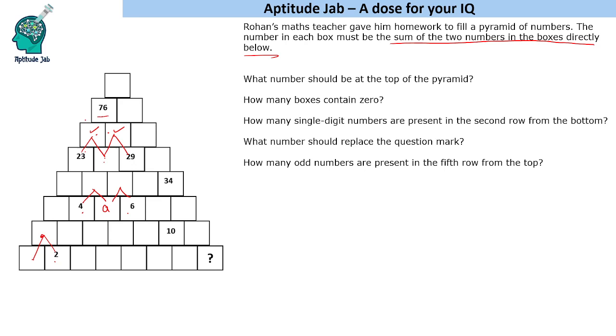So let us say this number is x. So this number will be x plus 23 and this will be x plus 29. When we add these two numbers, we get 2x plus 52 as 76. So 2x is 24, or x is equal to 12. So now we can fill these numbers and get the result. So 12, this will be 35 and 41.